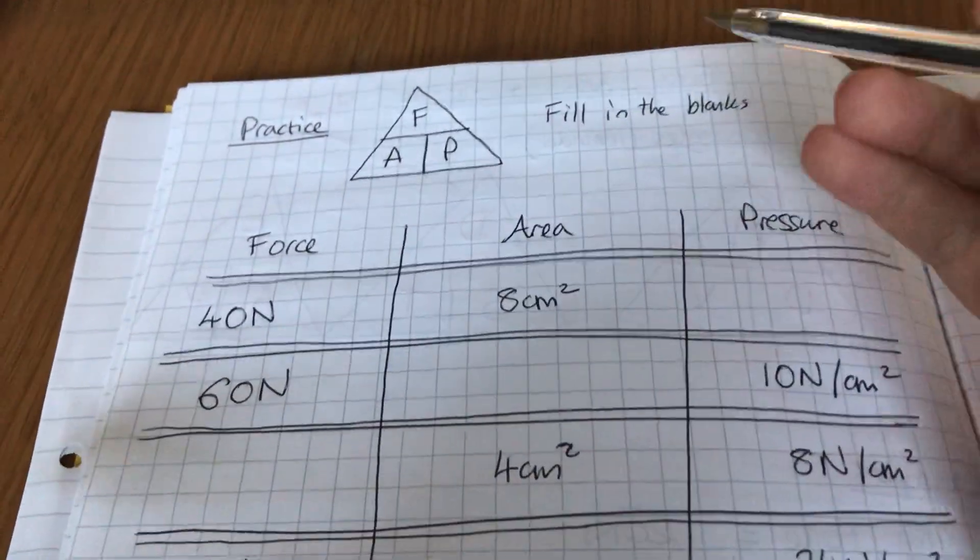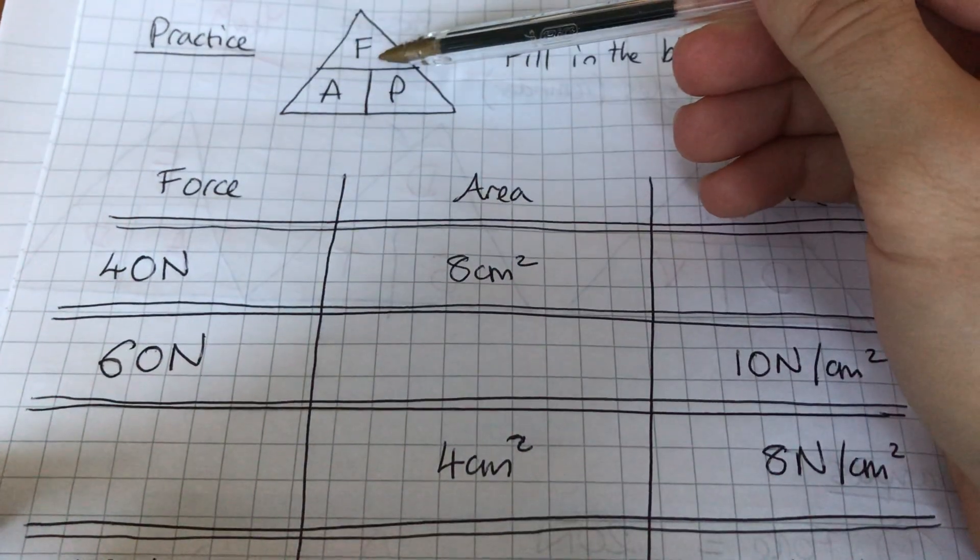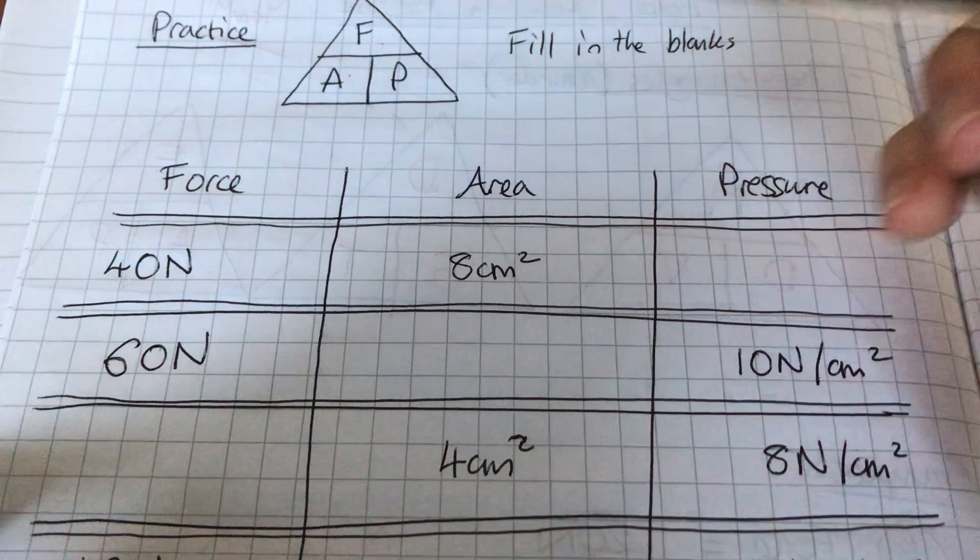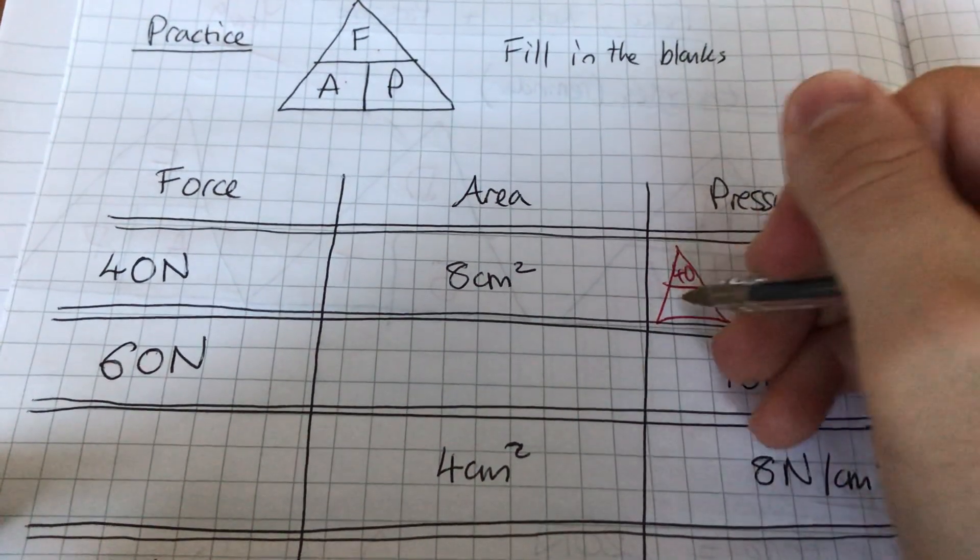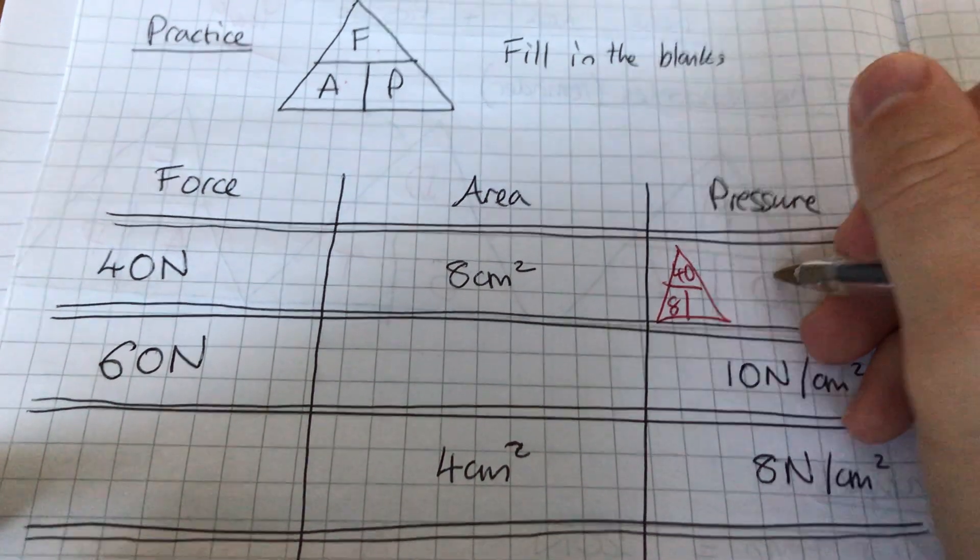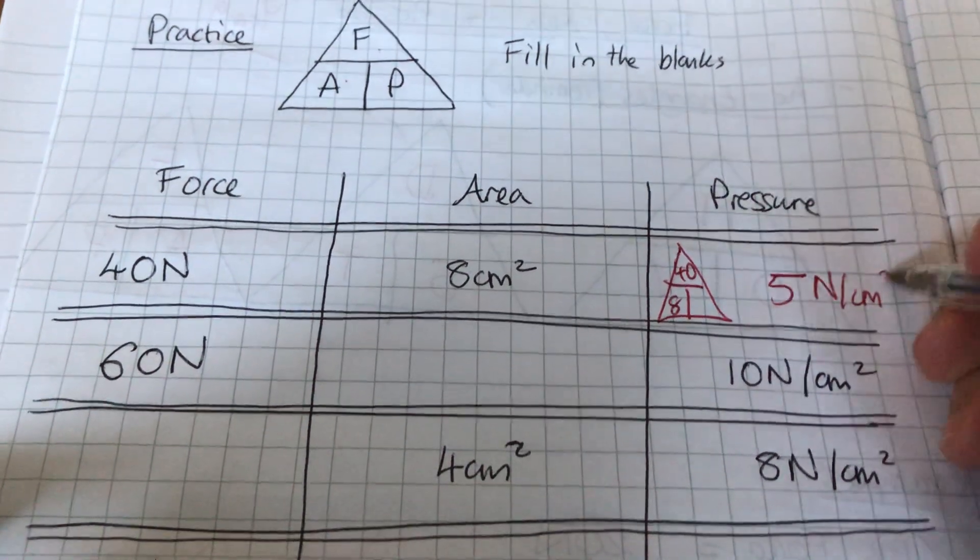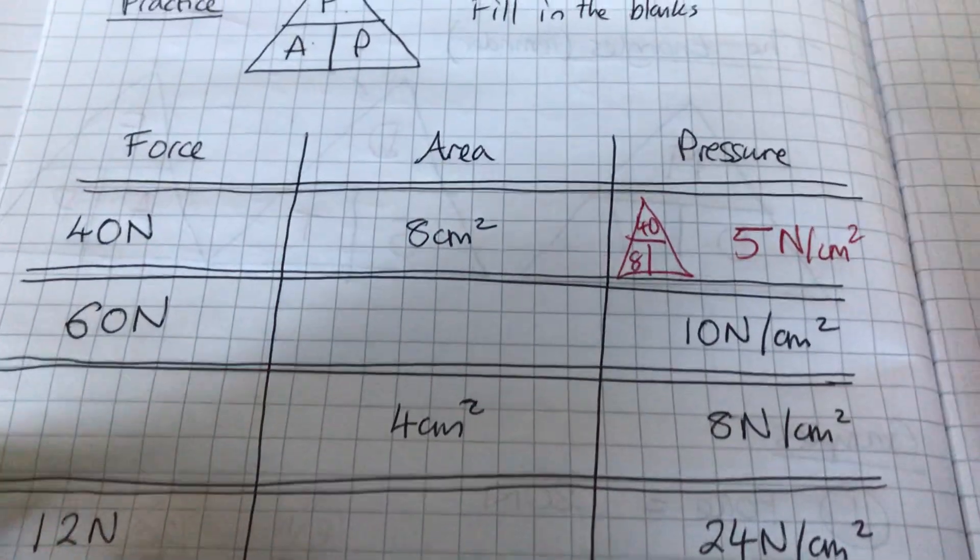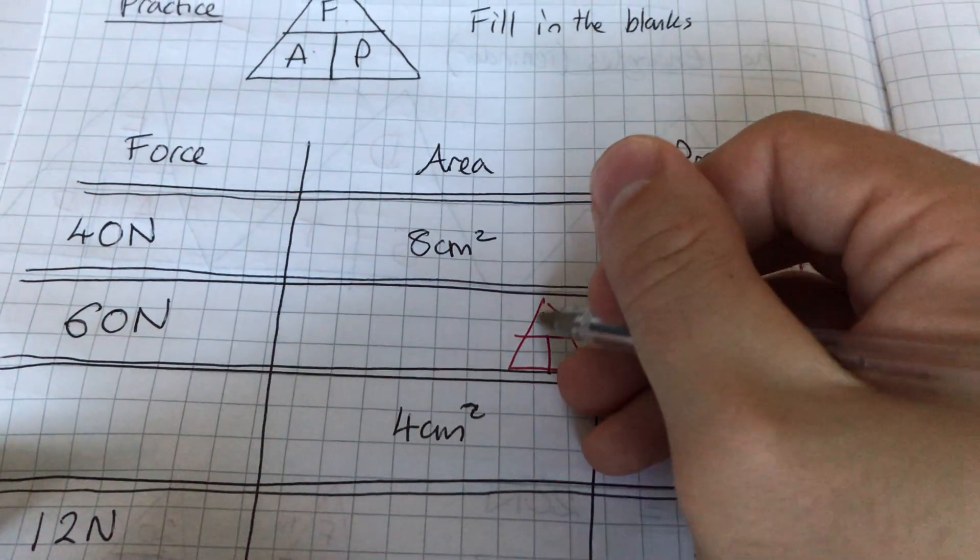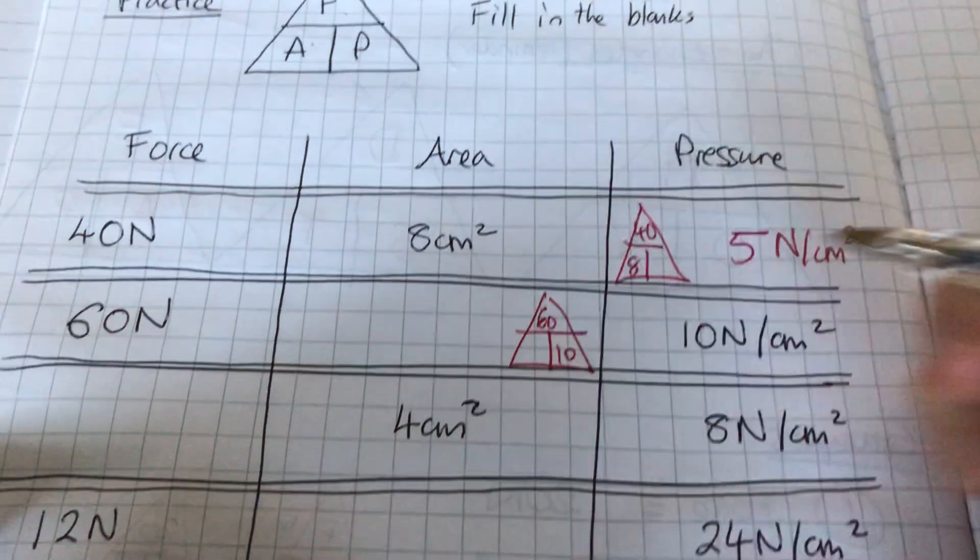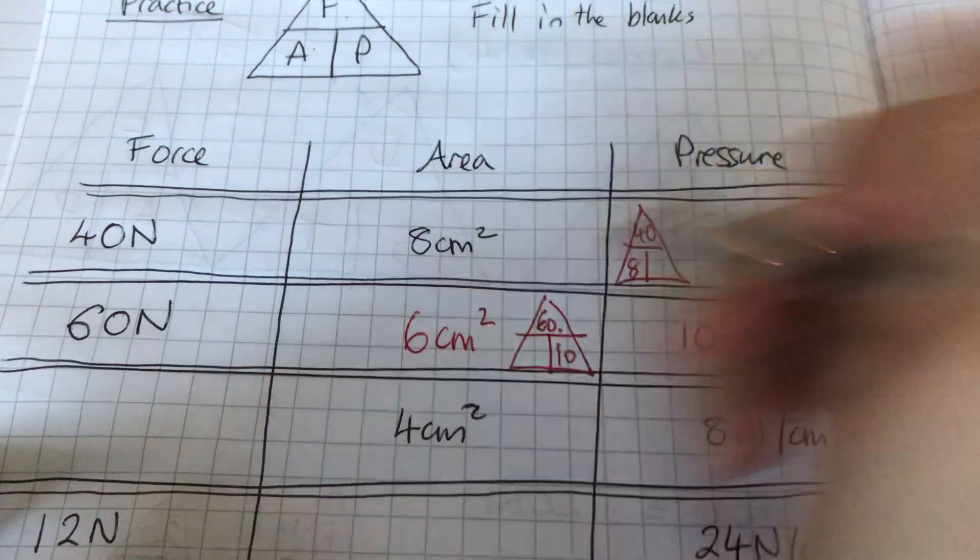Let's remember, force would be 40 on the top there, area would be 8. So I'm going to just do a little triangle here to remind me, 40 and 8, which means I'm going to divide. 40 divided by 8, because of course 5. And the one we're missing is newtons per centimeter squared. Next one, I'm going to draw another triangle. This time I don't know what the area is, so I'm going to put 60 there and 10 there, and I'm going to do 60 divided by 10, which of course is 6, and it's centimeter squared that I'm missing.